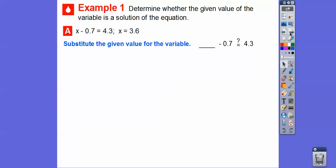So we'll go ahead and substitute in the 3.6 in for x. So instead of x minus 0.7, we're going to put 3.6 minus 0.7. And think of 36. 36 minus 7 is 29. So 3.6 minus 0.7 is 2.9.